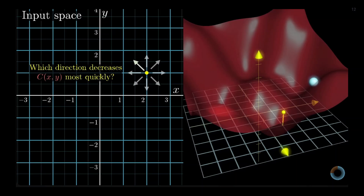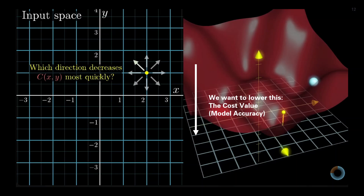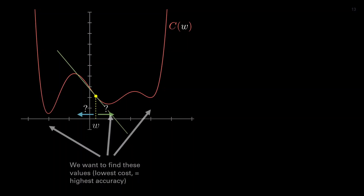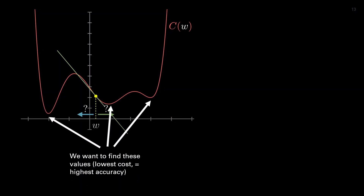A 3D plane is used to illustrate the use of 2D inputs — x and y — and a single output. The cost function, which shows as the height of the graph, measures how well a machine learning model's predictions match the true or actual values. We want to lower this value, which increases the model's accuracy. To do this, we find these values — the lowest cost, which equals the highest accuracy — by finding the local minimum values. We take the derivative, set it equal to zero, and then solve it.